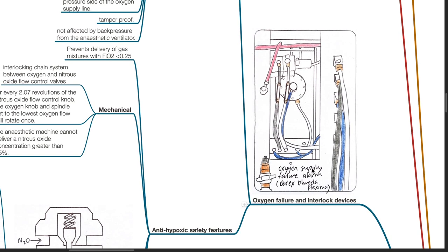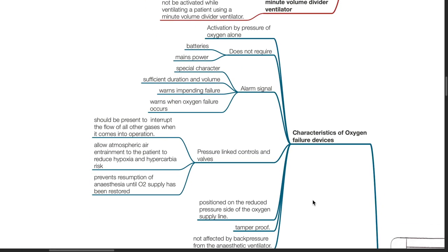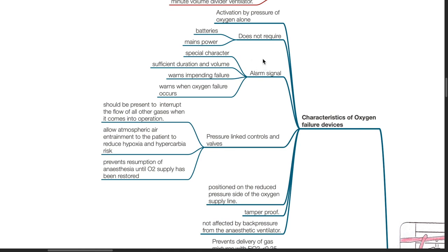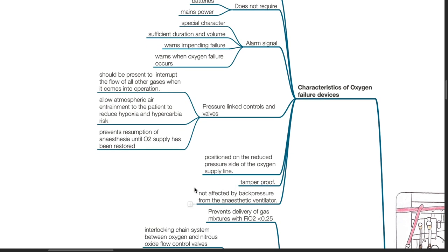Oxygen failure and interlock devices. Characteristics of oxygen failure devices: activated by pressure of oxygen alone, does not require batteries or mains power, alarm signal has a special character with sufficient duration and volume, and it warns of impending failure. Pressure link controls and valves should be present to interrupt the flow of all other gases when in operation, allow atmospheric air entrainment to reduce hypoxia and hypercarbia, and prevent resumption of anesthesia until oxygen supply has been restored. These oxygen failure devices should be positioned on the reduced pressure side of the oxygen supply line, should be tamper-proof and not affected by back pressure from the anesthetic ventilator.